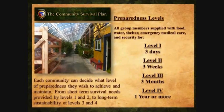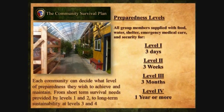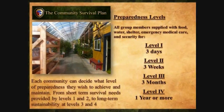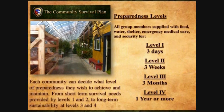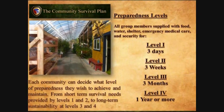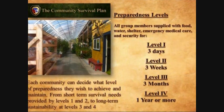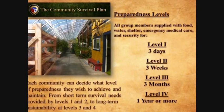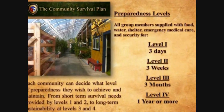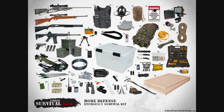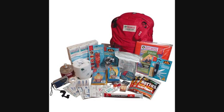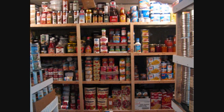Level one meant that each team had the supplies and equipment needed to survive three days. Level two, to survive three weeks. Level three, three months. And level four, to survive a year and eventually total self-sufficiency. This gave me a logical progression of assembling and purchasing equipment and supplies for all five teams.